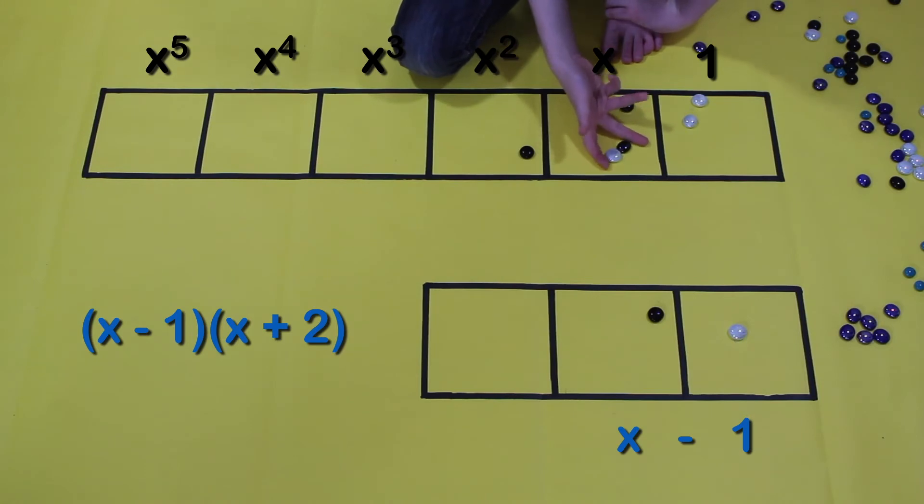Alright, we have a dot and an anti-dot in the same box, and when they're all in the same box, they will disappear. There we go.